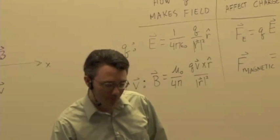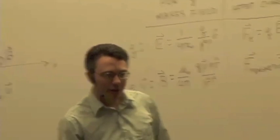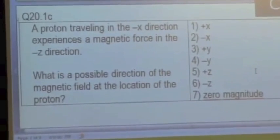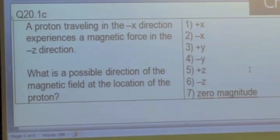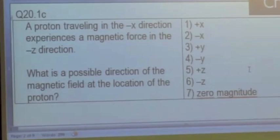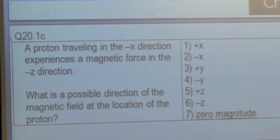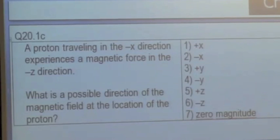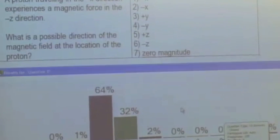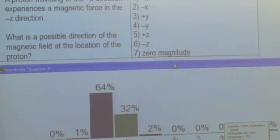Let's try one more. The proton is traveling in the negative X direction, and it experiences a magnetic force in the negative Z direction. So we know the direction of the force. We're trying to work out a possible direction of the magnetic field that causes that force — it's sort of the reverse question. The majority answer says answer three, positive Y direction. Let's test that out.